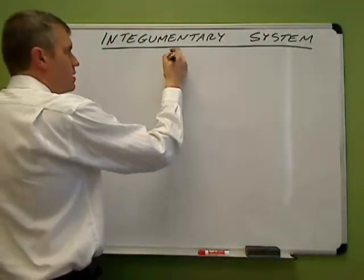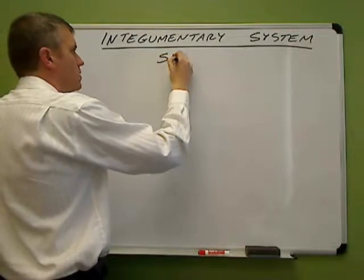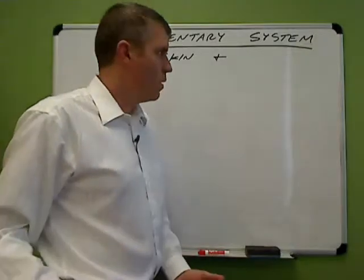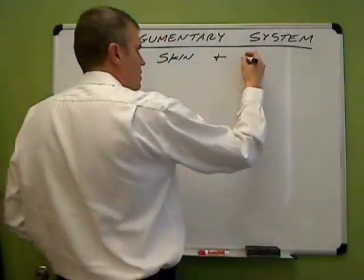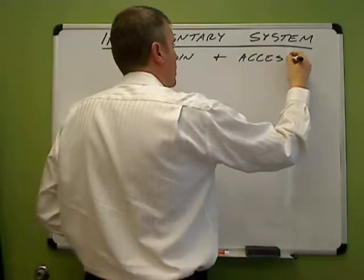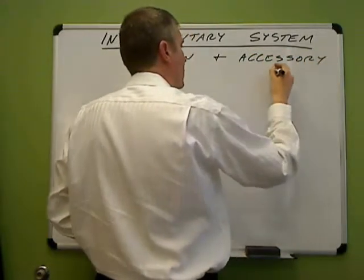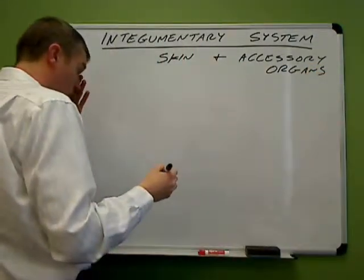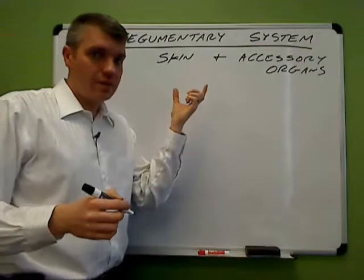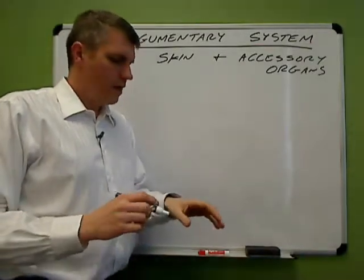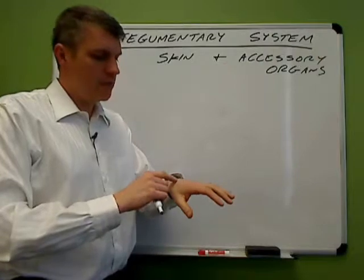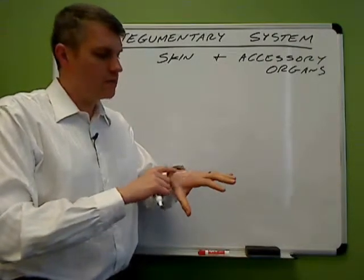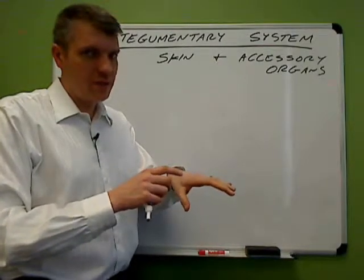The integumentary system is basically the skin, along with its accessory organs. The skin is an epithelial tissue, but underneath it's also a connective tissue. There are three major layers to the skin. The epidermis is the part that you can actually touch — it's the actual surface of the skin — and it's a stratified squamous epithelium.